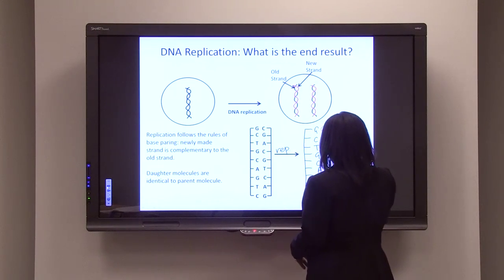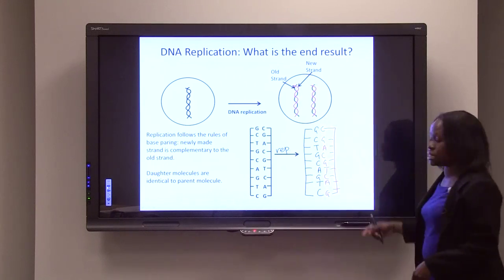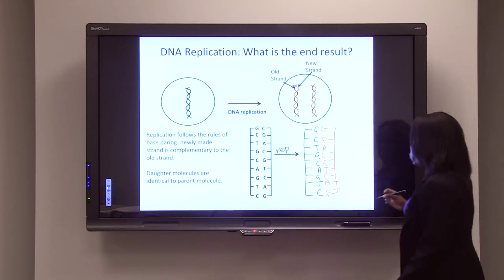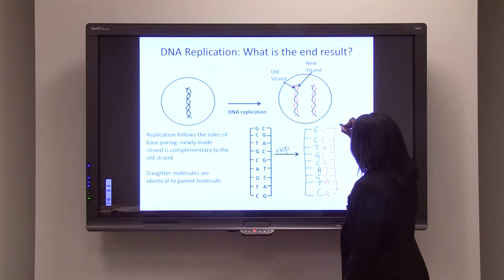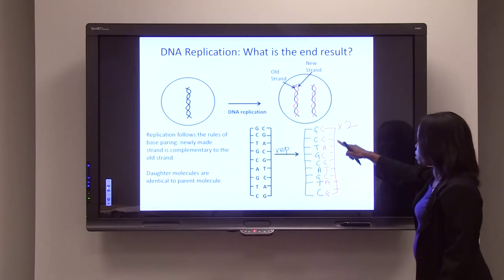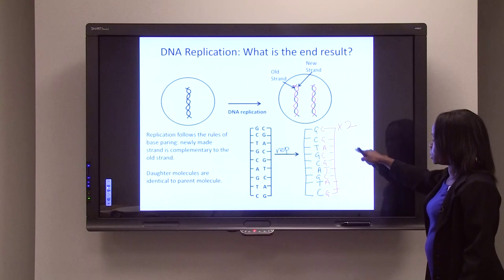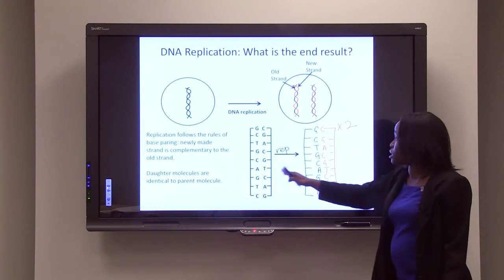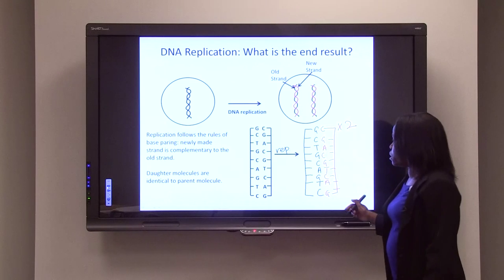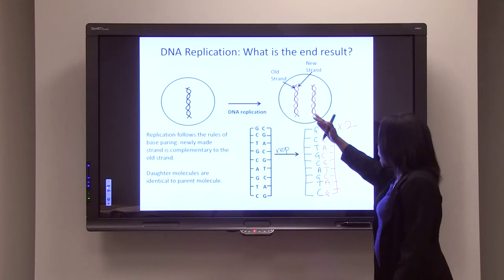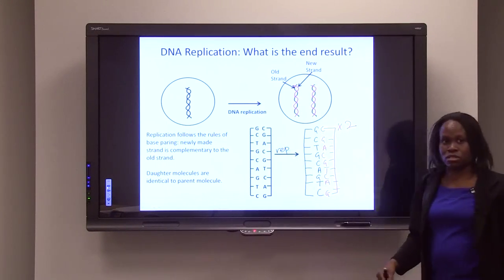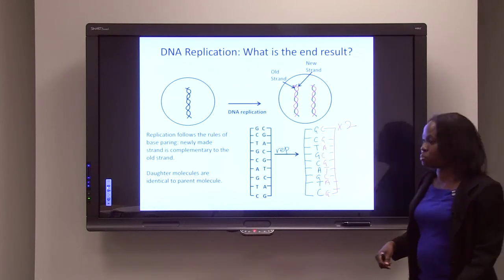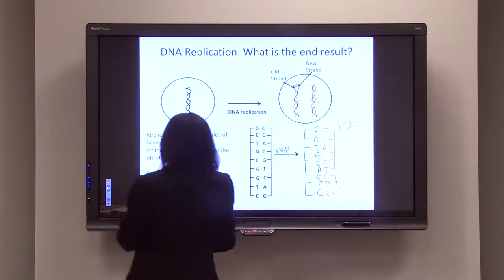So if you notice, the strand that is made is complementary to the template strand, and this is because of base pairing rules. So you actually end up with two of these molecules. So it's this molecule times two. So what's important, if you look at your daughter molecules and you look at your parent molecule, they are identical. So as long as DNA replication occurs without errors, you're going to end up with two identical daughter molecules. And this is how you can duplicate and hence transmit your information.